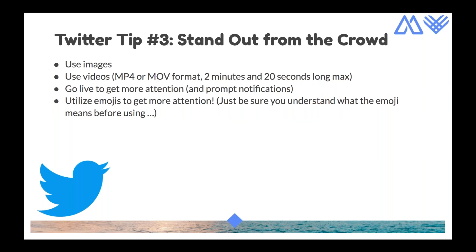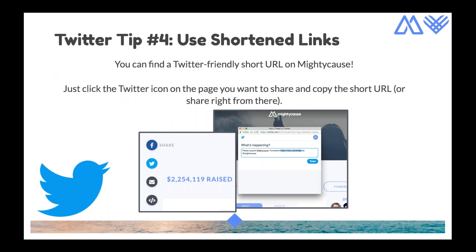Twitter also likes certain content types. Use images and videos — video must be MP4 or MOV format and maximum two minutes and 20 seconds. You can also go live on Twitter to get more attention, as it notifies people when you've gone live. Emojis on Twitter also get more engagement than tweets without them — just make sure you understand the emoji fully. One last tip: you can find shortened URLs for Twitter right on Mighty Cause. Go to the page you want to share, click the Twitter icon, and copy the link — this eliminates the need for services like Bitly.